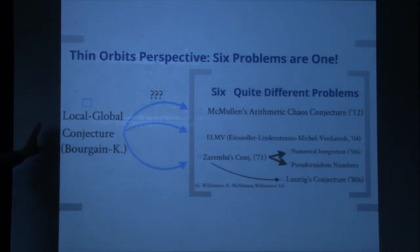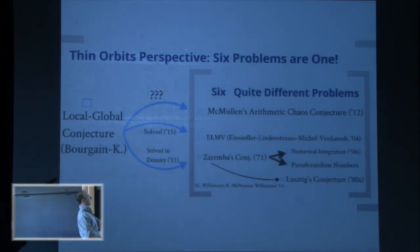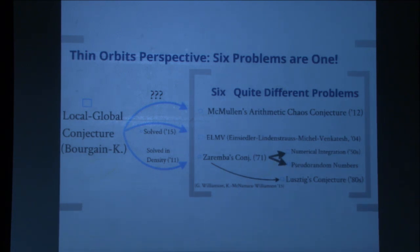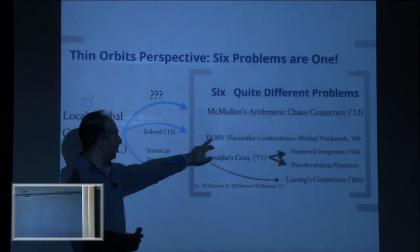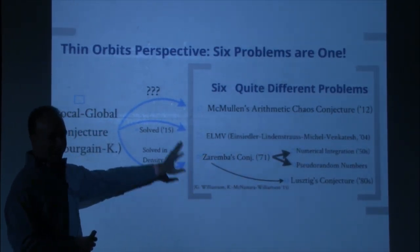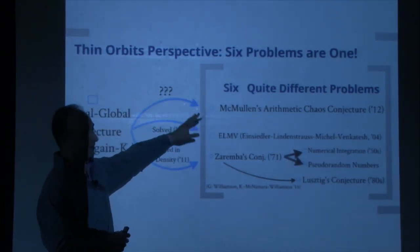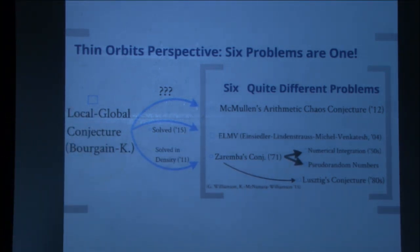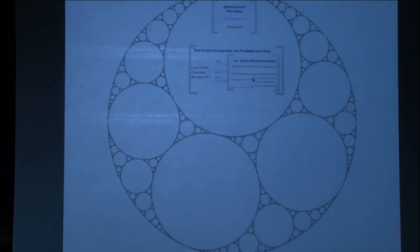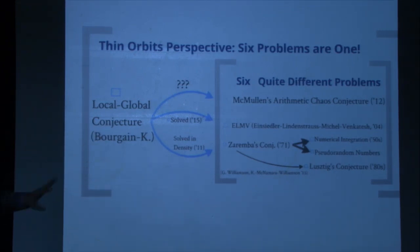McMullen's problem is just too hard — you need the full force of this conjecture to settle arithmetic chaos. But already a few years ago, we gave a density version of Zaremba's problem, and more recently we were able to answer the ELMV question. Under the hood of all of this is the same principles of thin orbits, although you won't see that picture again.